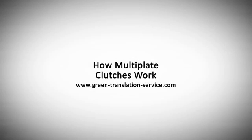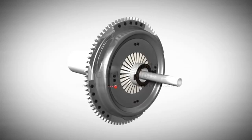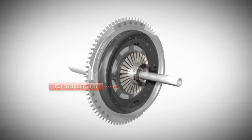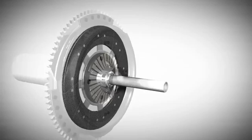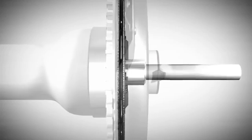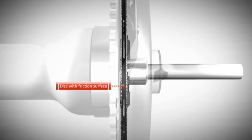Multi-plate clutches work with several friction disks, unlike drive friction clutches used in most cars with manual transmissions where only one friction disk with two friction surfaces is used to transmit power from the engine to the transmission.